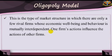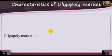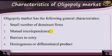Oligopoly model. This is the type of market structure in which there are only a few rival firms whose economic well-being and behavior is mutually interdependent. One firm's action influences the action of other firms. Oligopoly market has the following general characteristics: 1. A small number of dominant firms. 2. Mutual interdependence. 3. Barriers to entry. 4. Homogeneous or differentiated product.